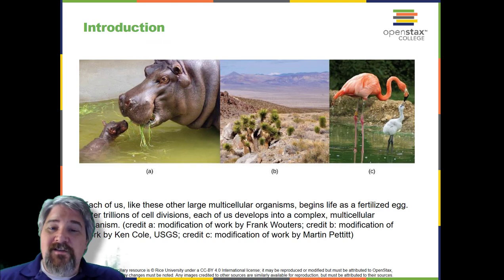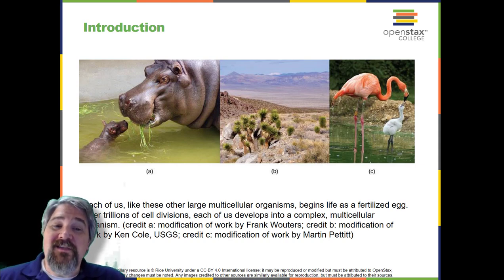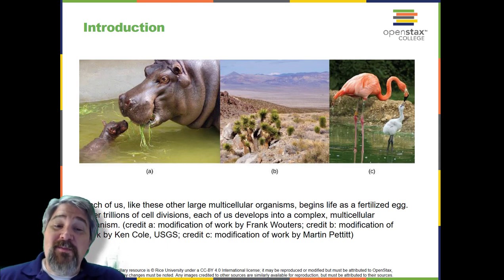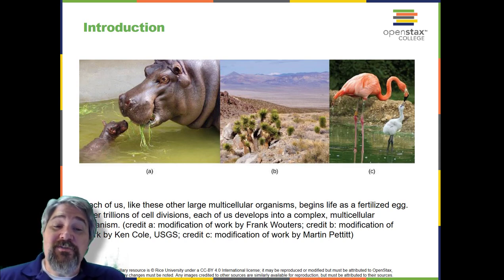Introduction. The ability to reproduce in kind is a basic characteristic of all living things. In kind means that the offspring of any organism closely resembles its parent or parents. Hippopotamuses give birth to hippopotamus calves. Monterey pine trees produce seeds from which Monterey pine seedlings emerge. And adult flamingos lay eggs that hatch into flamingo chicks.